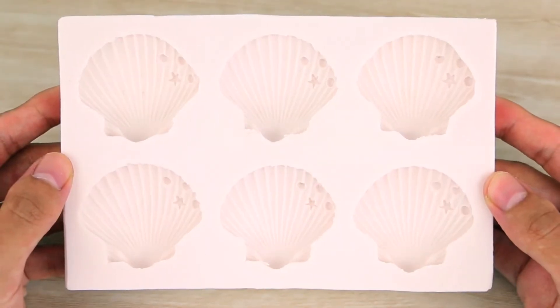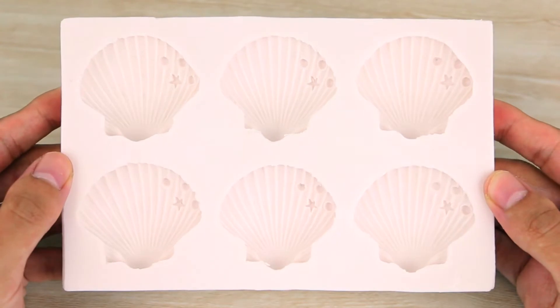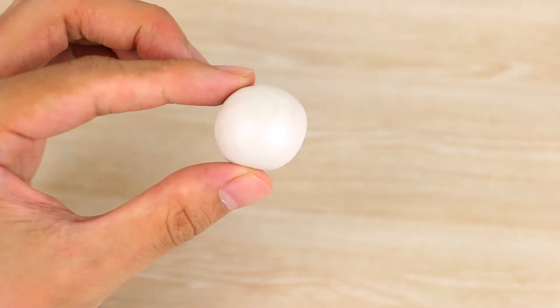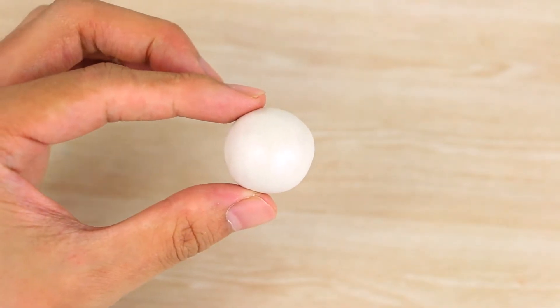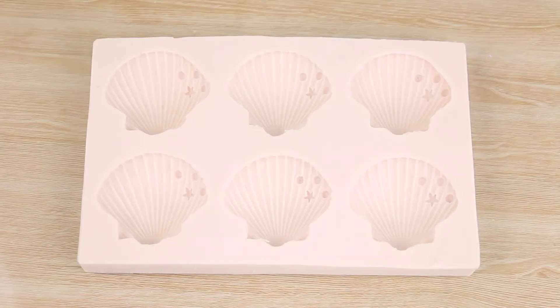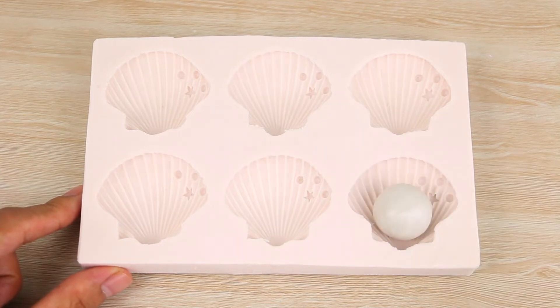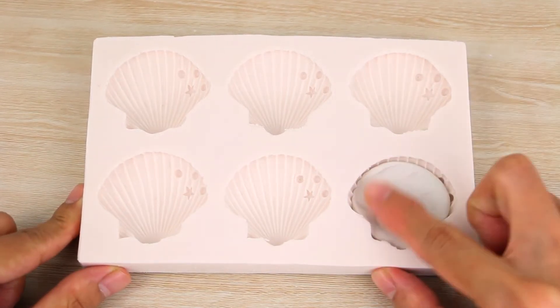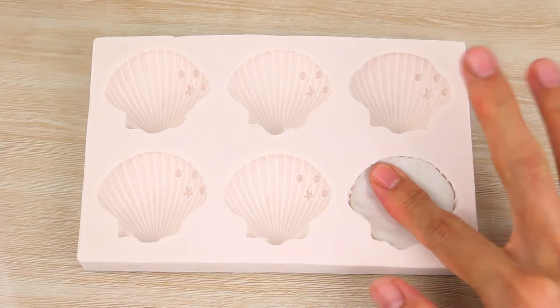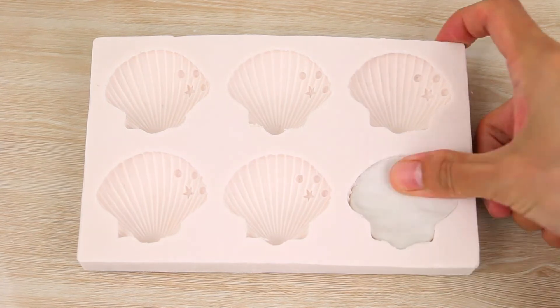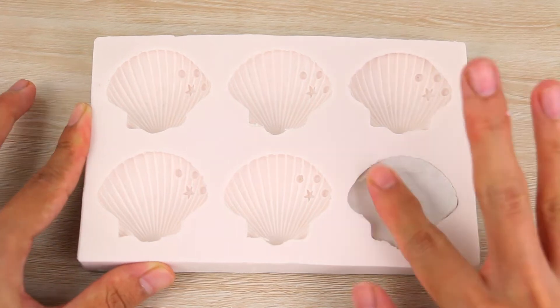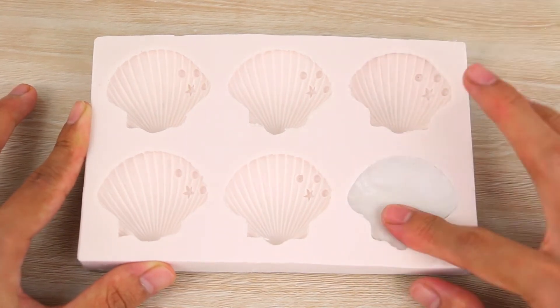To start out, I have this really detailed seashell mold and I'll leave a link to that in the description box below. I have a big bowl of some pearl clay and I'm just going to place that into the mold and squish it down really well. I'm also trying to make sure that I press a curve into the clay and make it like a real seashell would have.